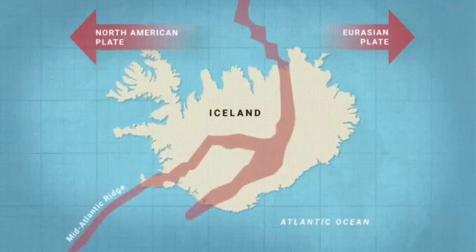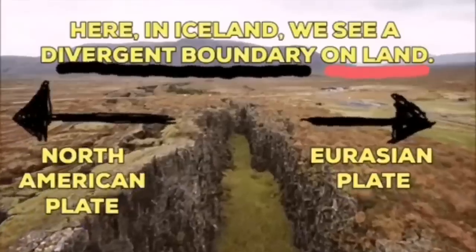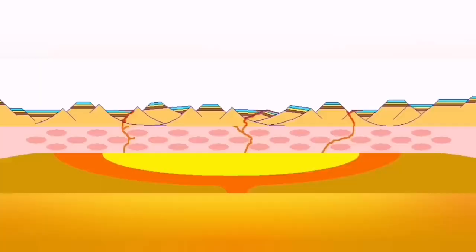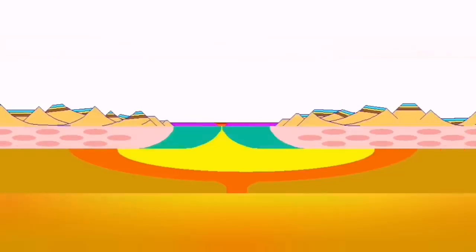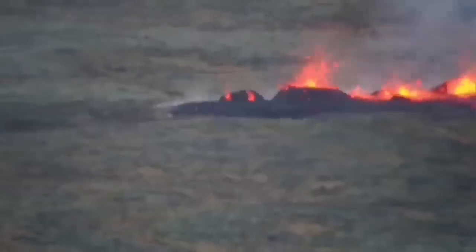Such a thing happens in Iceland, on the land, we can see it. Eurasian plate and North American plate, through these grabens, this is the hollow that you see in the middle, are separating.